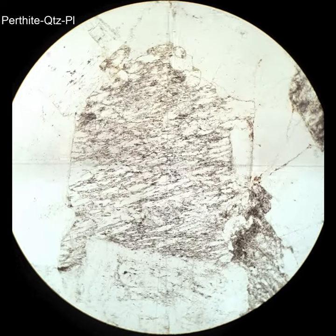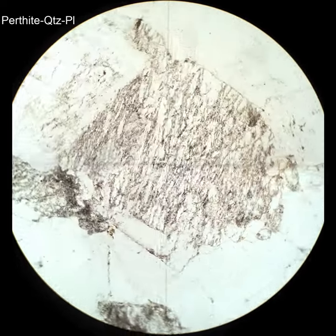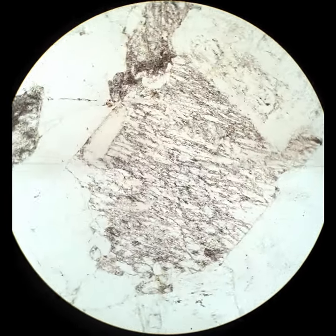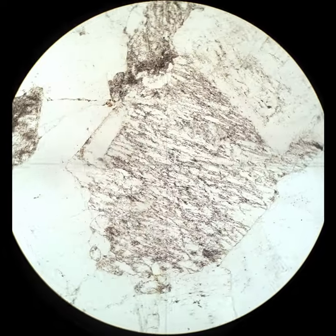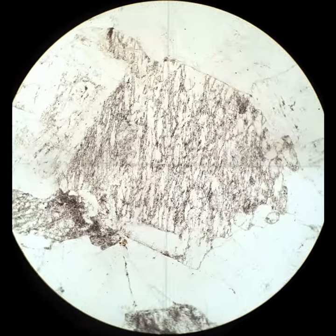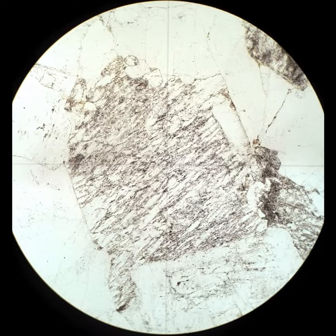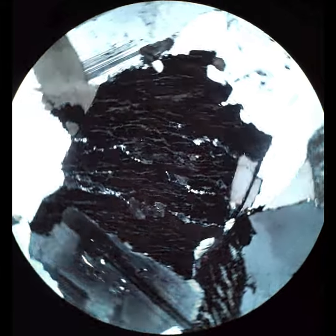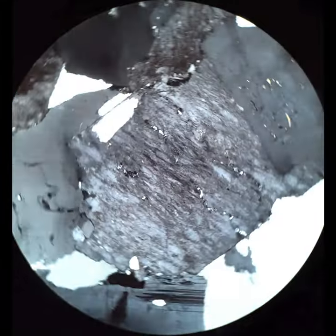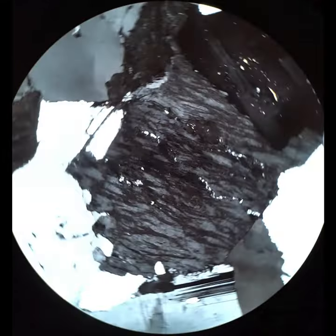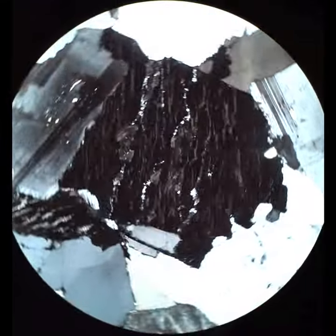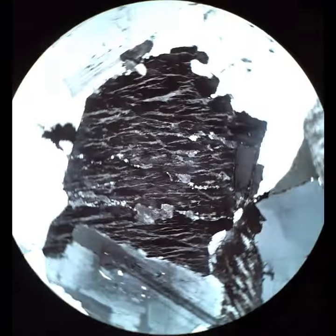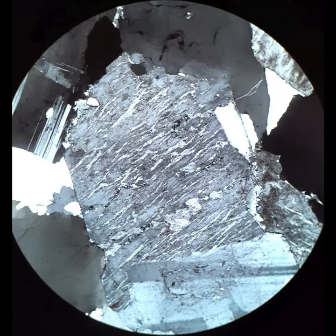This is another more typical perthite you'll see when I cross the polars. K-feldspars tend to alter to clay more easily than other feldspars or other silicates, and so all that sort of brownish fine-grained stuff is a clay alteration of the feldspar. That's pretty typical for K-feldspar, and you don't see it with the quartz crystals around it. The plagioclase is a little altered, but not nearly as much as the K-feldspar, and you would see that in plain polarized light.